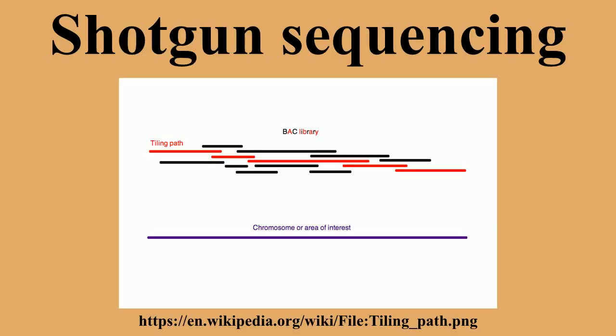In genetics, shotgun sequencing, also known as shotgun cloning, is a method used for sequencing long DNA strands. It is named by analogy with the rapidly expanding, quasi-random firing pattern of a shotgun.